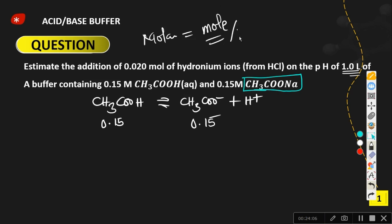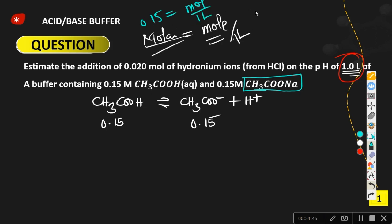Molarity means moles per liter. Since the volume is one liter, dividing by one liter leaves the value unchanged — so 0.15 molar in 1 liter equals 0.15 moles. Whenever you see a molar concentration and the volume is 1 liter, the number of moles equals the molarity. So both acetic acid and acetate are 0.15 moles.